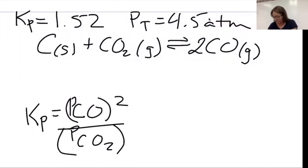And I know that at equilibrium, notice I omitted carbon because it was a solid. I know that at equilibrium, the partial pressure of CO plus the partial pressure of CO2 is going to equal a total of 4.5.